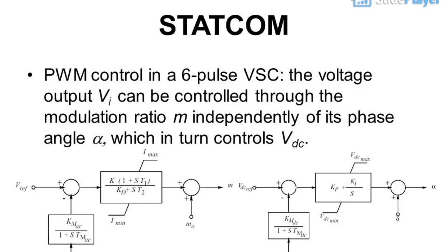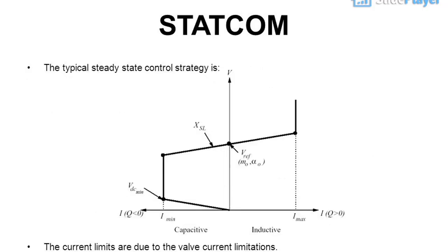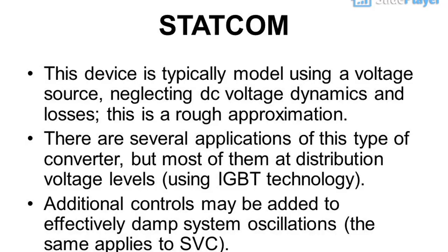PWM control in a 6-pulse VSC: the voltage output V can be controlled through the modulation ratio M independently of its phase angle, which in turn controls V_DC. The typical steady state control strategy uses current limits due to the valve current limitations. This device is typically modeled using a voltage source, neglecting DC voltage dynamics and losses — this is a rough approximation.